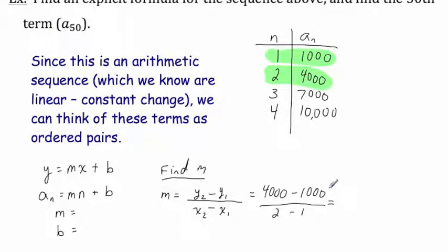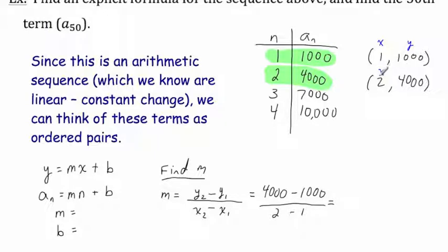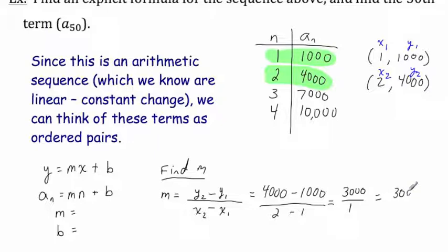If it's easier to see the substitutions, you can rewrite these as ordered pairs and label them — x1, y1 for the first point and x2, y2 for the second. That shows that y2 is 4,000, y1 is 1,000, x2 is 2, and x1 is 1. Simplifying: 4,000 minus 1,000 is 3,000, over 2 minus 1, which is 1. So 3,000 over 1 equals 3,000. We have found the slope: it's 3,000.